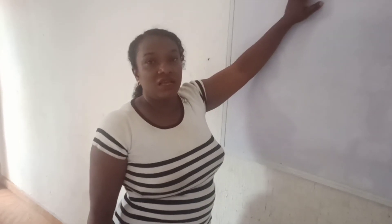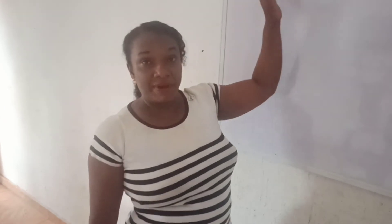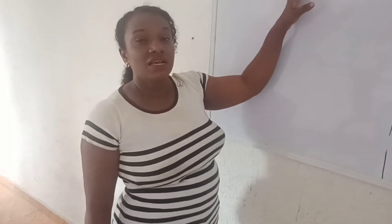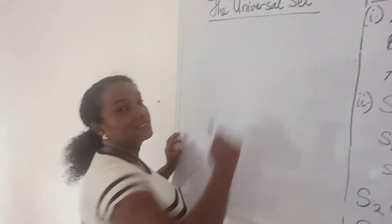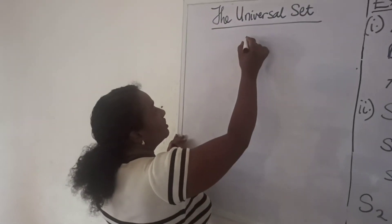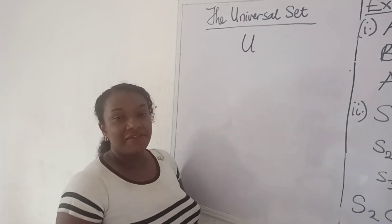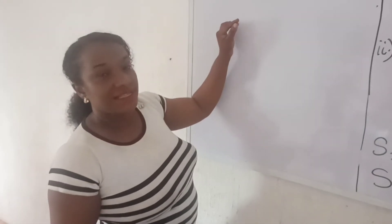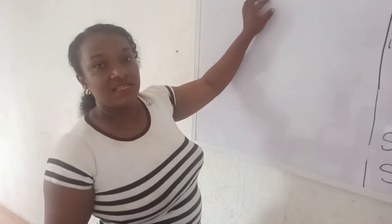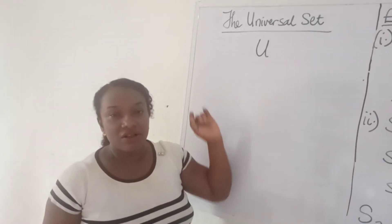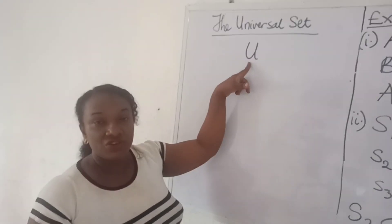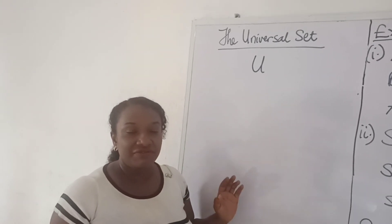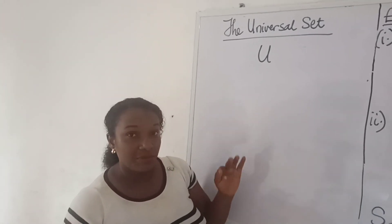Now let's look at the universal set. All sets in a particular discussion are subsets of a fixed set called the universal set. The universal set is denoted by U. In every discussion about sets, we always assume there is a universal set, and all sets under consideration are subsets of it. We may have different universal sets for different discussions.